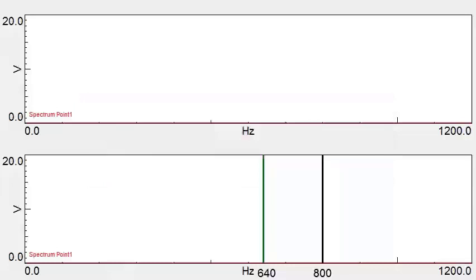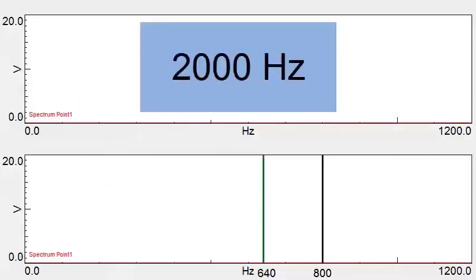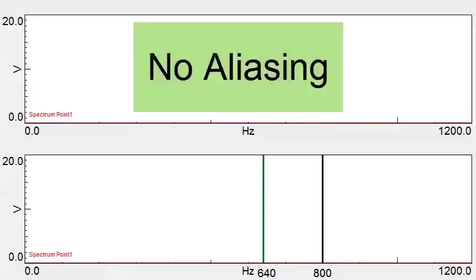The top graph has a bandwidth of 2,000 Hz, so as the sine wave sweeps up to 1,200 Hz, it will be able to capture the frequency range with no aliasing.